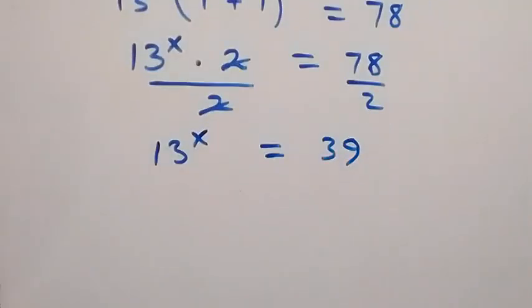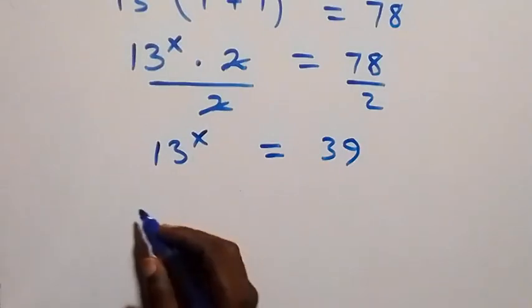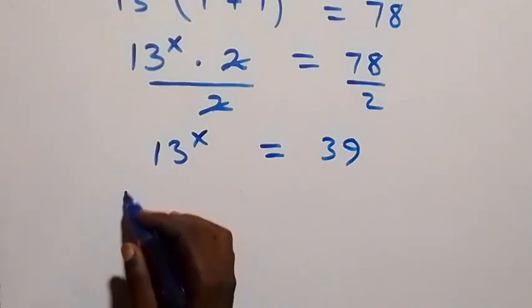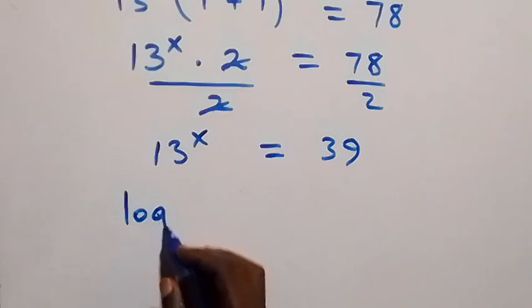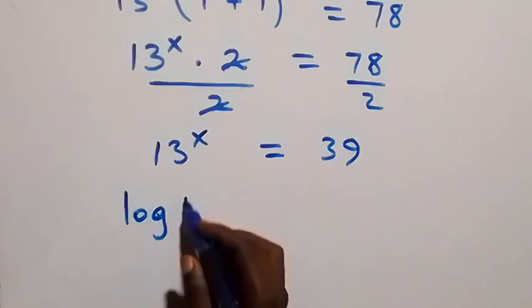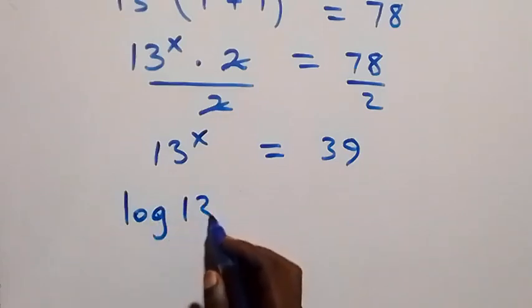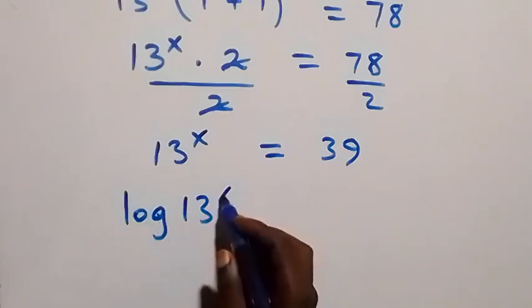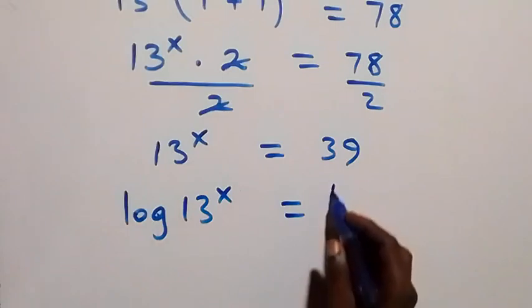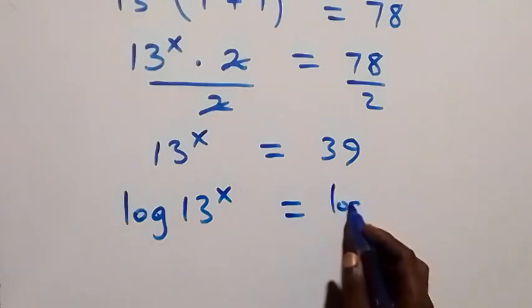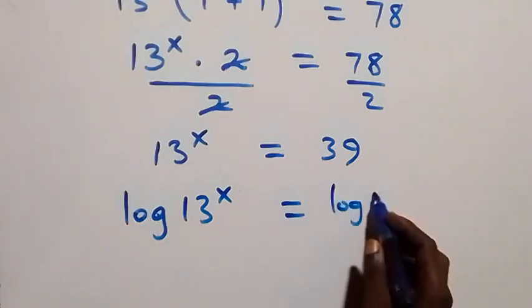The next step: we take the log on both sides. Then we have log of 13 raised to power x equals log 39.